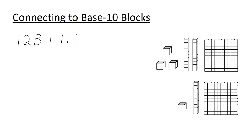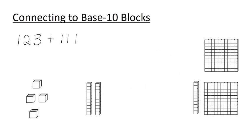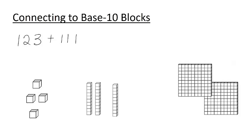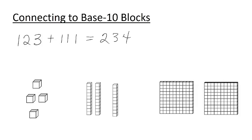Now that we've modeled the addends, we can add similar blocks together. 3 units plus 1 more unit is 4 units. 2 tens plus another 10 is 3 tens. 100 plus another 100 is 200. So our total sum is 234.